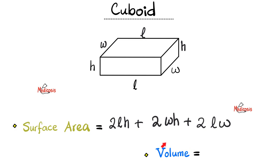As for the volume of the cuboid, you multiply length by width by height. In the cube they were equal, but in the cuboid they are not equal.